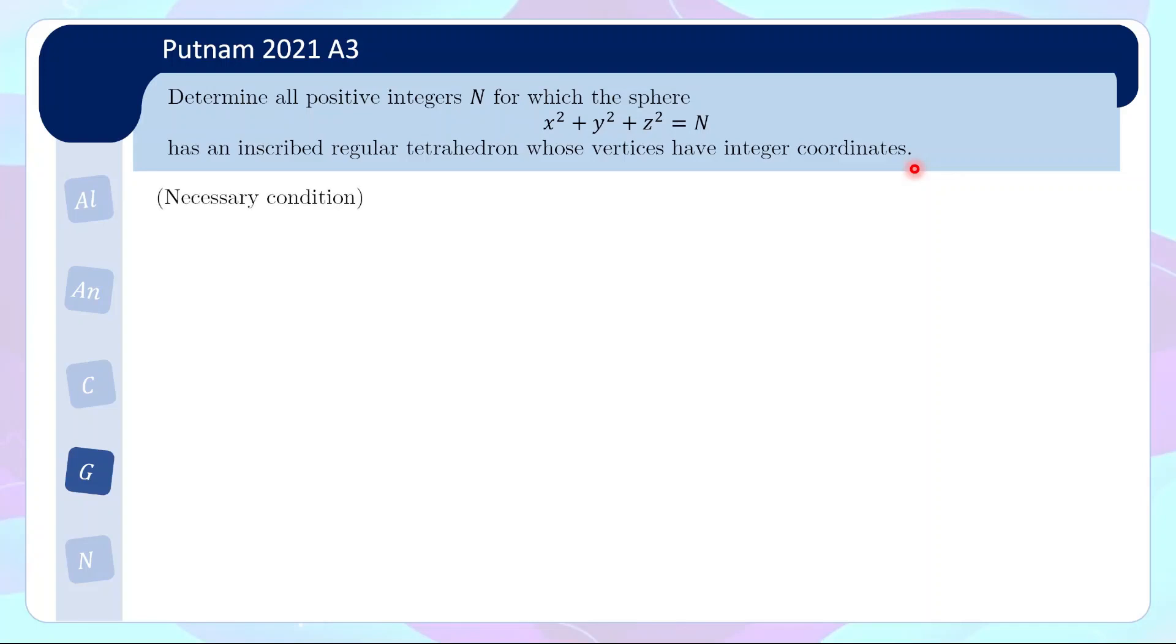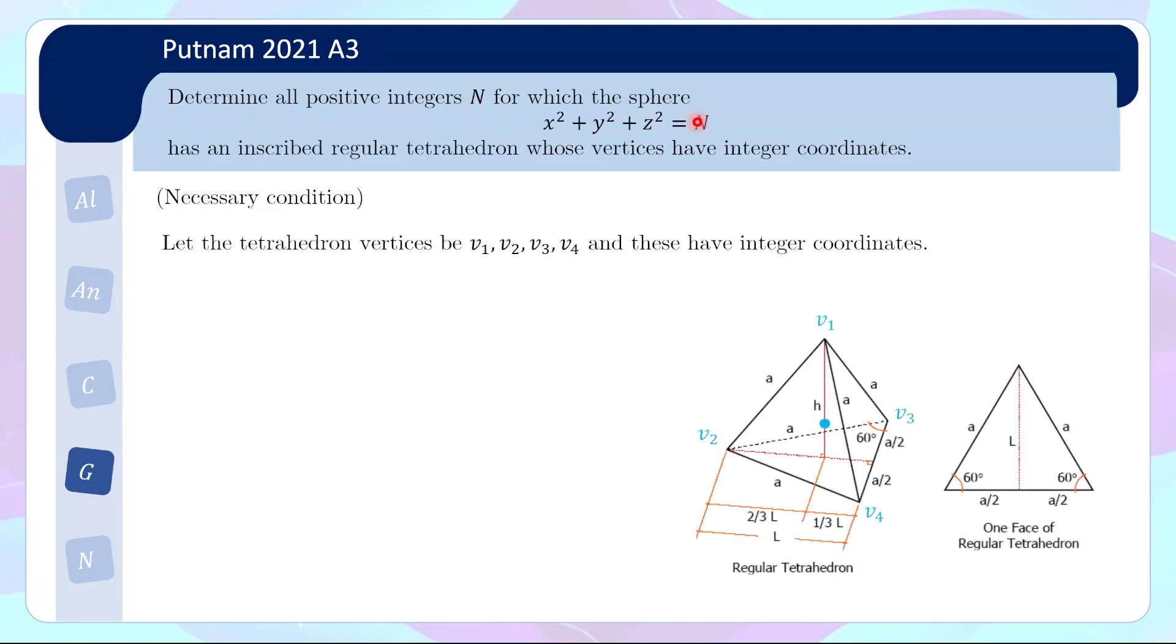Okay. The way we'll do this is, firstly, we'll see what this forces on n. So we'll find a necessary condition for n. And then for all such n's, we construct a solution to show that, indeed, these are all the n that works. Okay. So starting with the necessary condition, let the tetrahedron vertices be v₁, v₂, v₃, and v₄. And then we are going to say that these have integer coordinates. And from this, try and deduce what necessary condition n must fulfill.